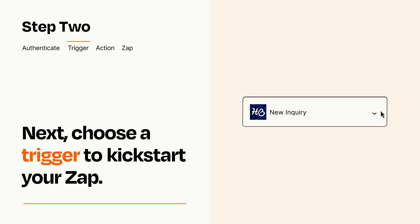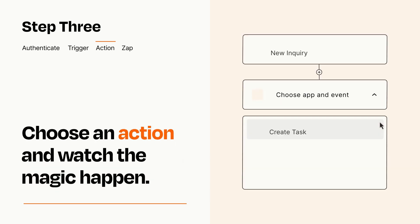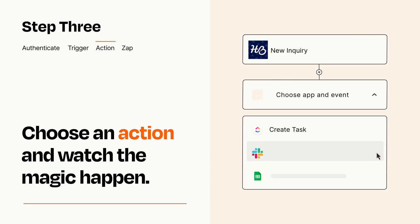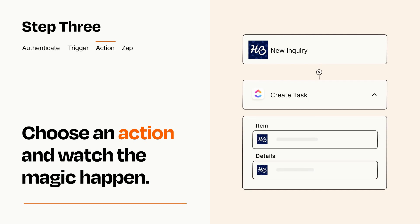This last part is where the magic happens. Choose the action you want to happen in your target app. You'll see a bunch of fields where you can specify the details of your Zap. You can type free form text or pull data in from your trigger step as needed.